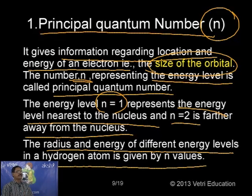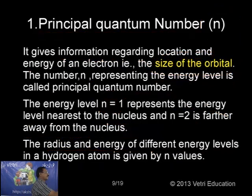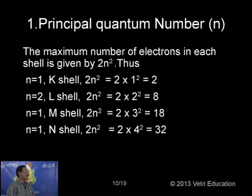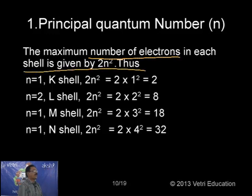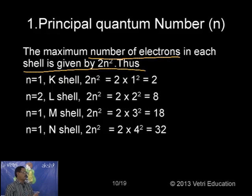When n = 1, the orbital is very close to the nucleus; n = 2 is farther away, and so on. The radius and energy of different energy levels in an atom are given by the n value. The maximum number of electrons in each shell is given by 2n².